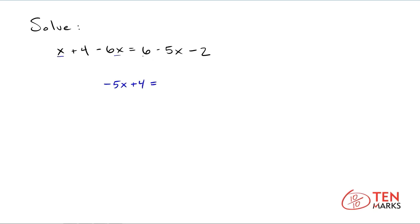Here your like terms are two constants. You have 6 minus 2, which will give you 4. So the right side, you're going to have negative 5x plus 4. And as you see here, the right side equals the left side.